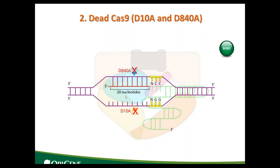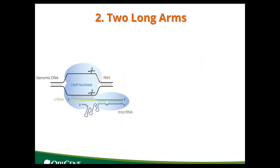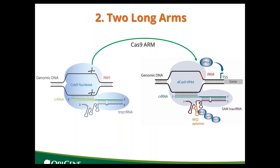That means we can fuse different effector proteins to dead Cas9. So far, there are two ways to link them together. The first is the direct way — you can fuse different effectors to the Cas9 at the plasmid level. Another is the indirect way, also called the gRNA arm. It's a little bit complicated — you need to insert a target fragment into the gRNA, and this gRNA will recruit its partner protein. In this case, it's MS2. MS2 can then be used to fuse more effector proteins, just like a cascade.